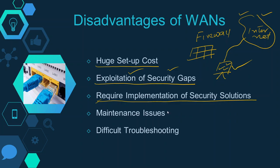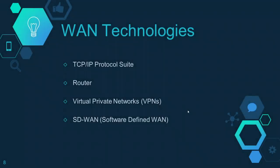WAN also has maintenance issues because it is a complex network, so there may be maintenance downtime and issues with the WAN. Troubleshooting is also difficult because of its complexity, the many devices involved, and the many connections.